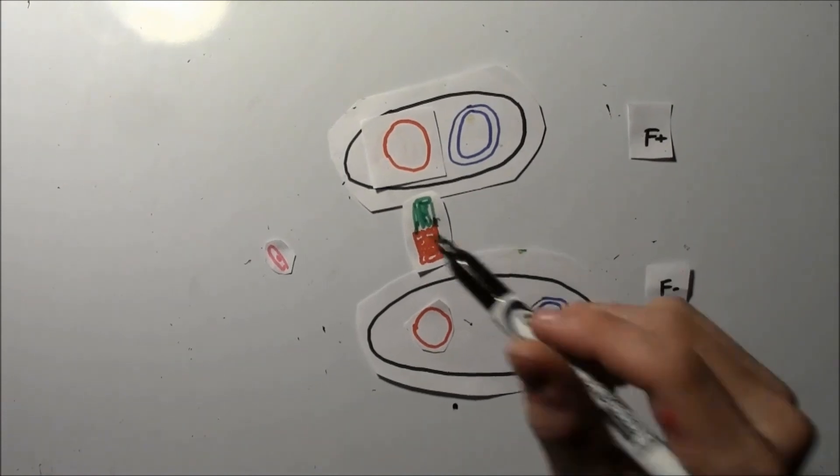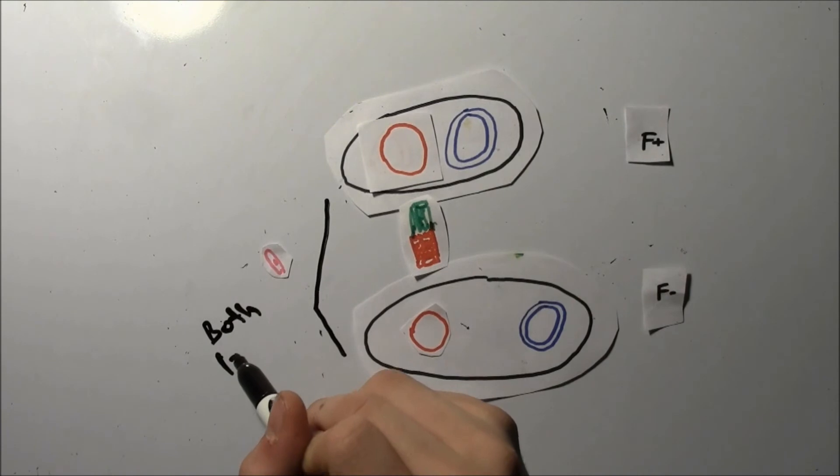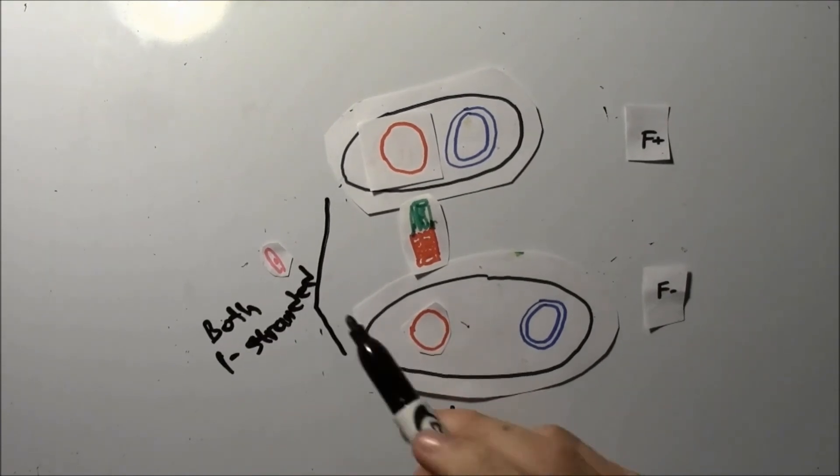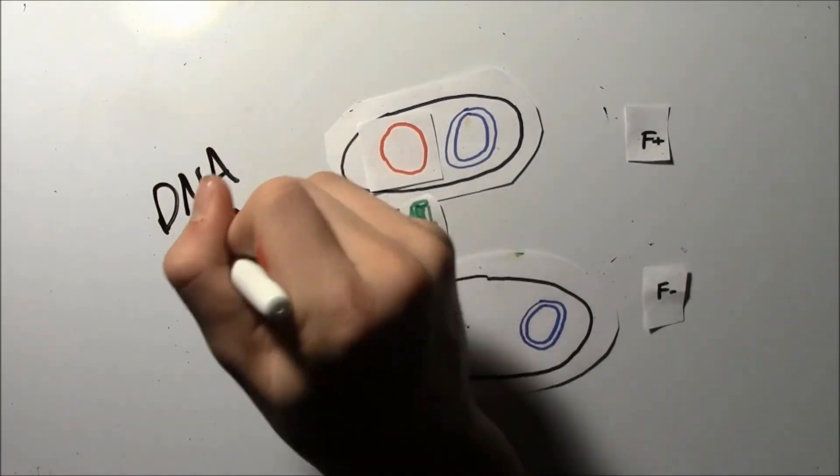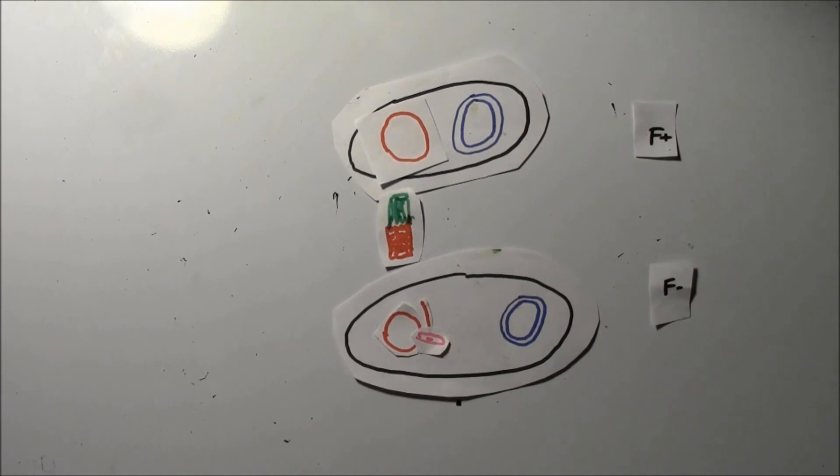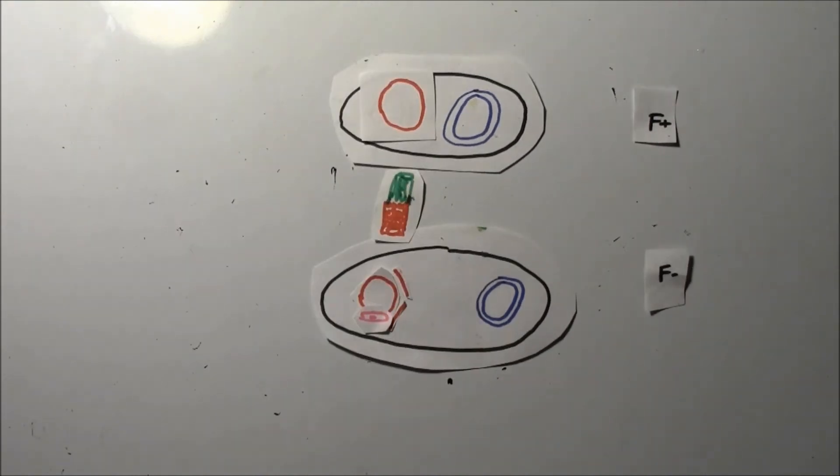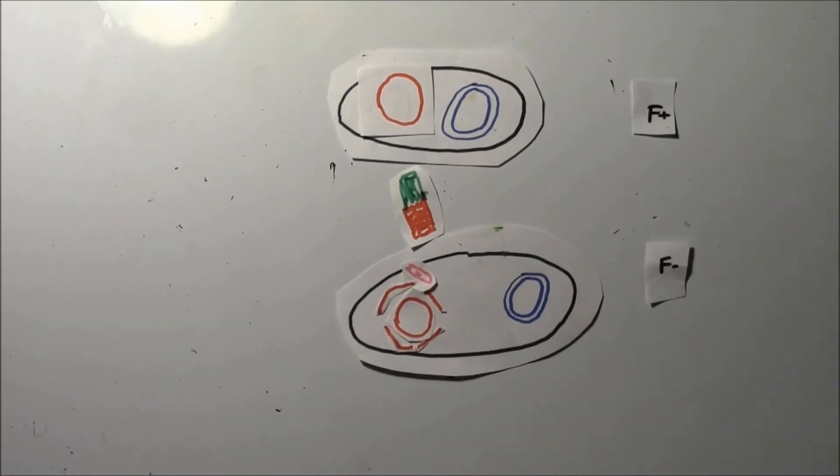Both of the bacterial cells now have a single-stranded F-factor DNA, which is ready to be copied into double-stranded DNA by DNA polymerase. Copy again, and again, and again.